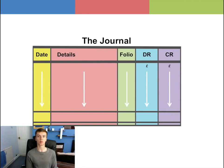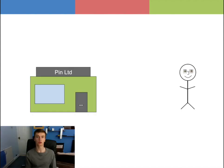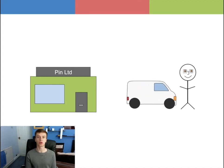In the debit column is the amount for the debit entry and in the credit column is the amount for the credit entry. Let's record information of a transaction. On the 22nd of October 2016, PIN Limited sold an idle motor vehicle for £2,000 on credit to W Smith.